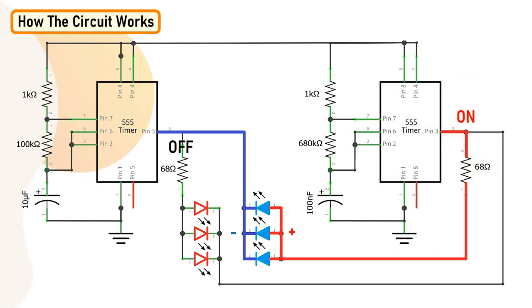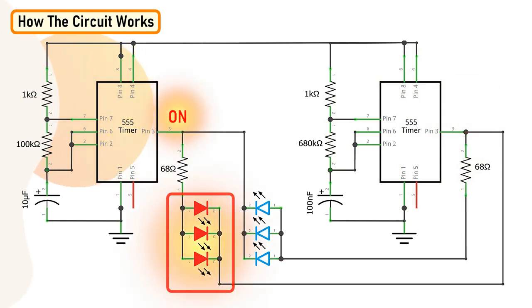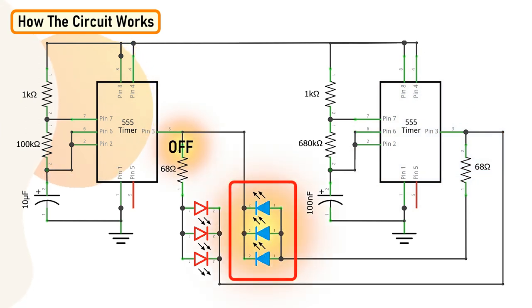Now when the first 555 timer IC is on, it turns on the first cluster of red LEDs and they blink at a speed at which the second 555 timer IC oscillates the output. Similarly, when the first 555 timer IC turns off, the second cluster of blue LEDs turn on and blink at a speed at which the second 555 timer IC oscillates the output. This cycle continues as long as there is power in the circuit creating a cool LED flashing effect similar to the flashing lights seen on the top of a police car.